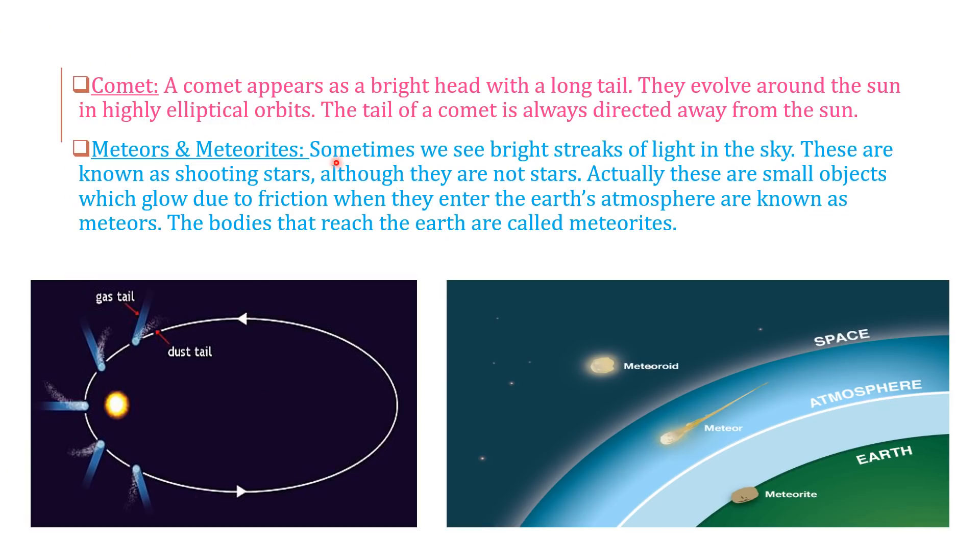Comet - a comet appears as a bright head with a long tail. They evolve around the sun in highly elliptical orbits. The tail of a comet is always directed away from the sun.